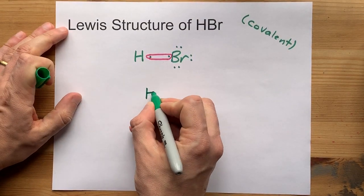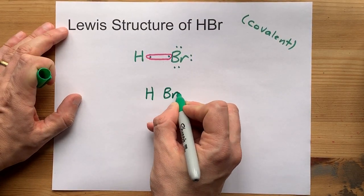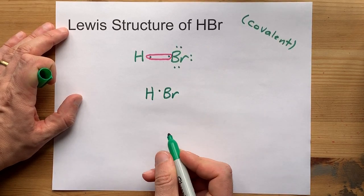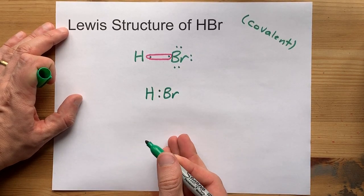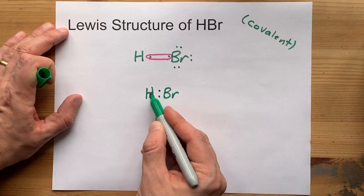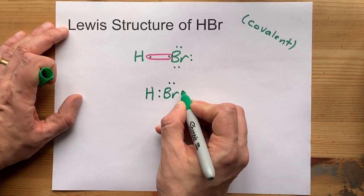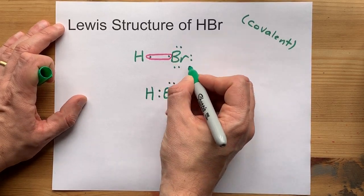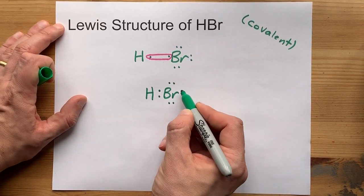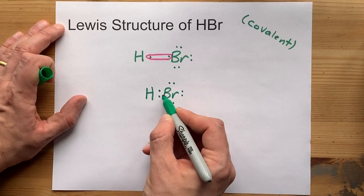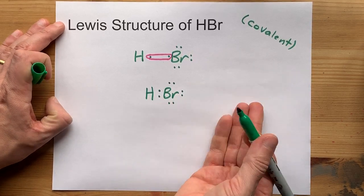Let me draw that for you. Here's the H and the Br. Here's the electron Br brought. Here's the electron H brought. There is a pair being shared between them. Bromine still has six electrons around it that are not shared. So bromine feels like it has eight. Hydrogen feels like it has two. And we're done.